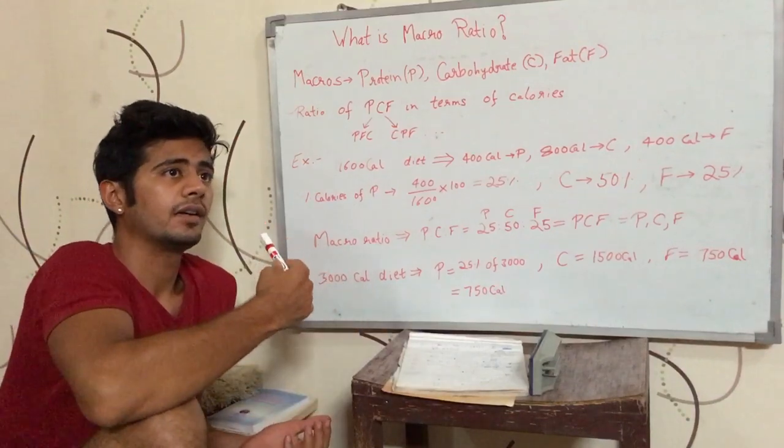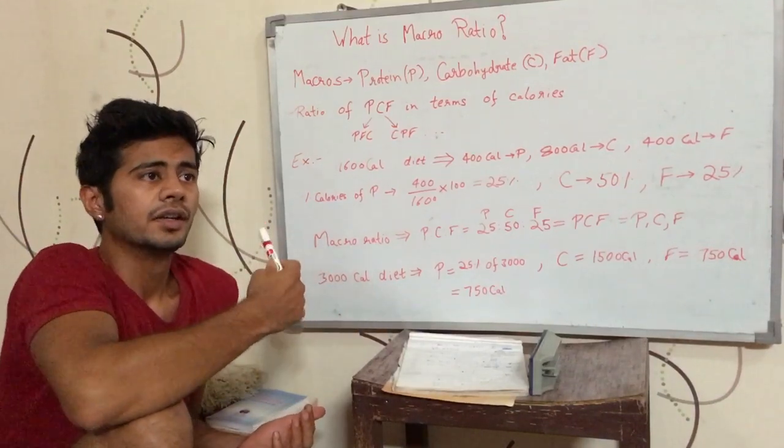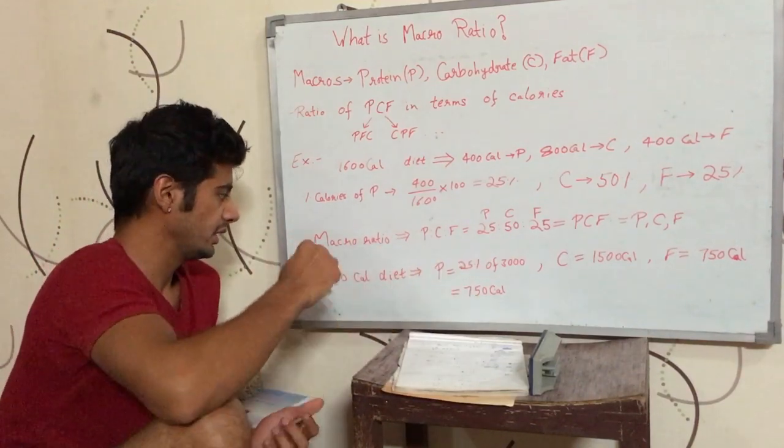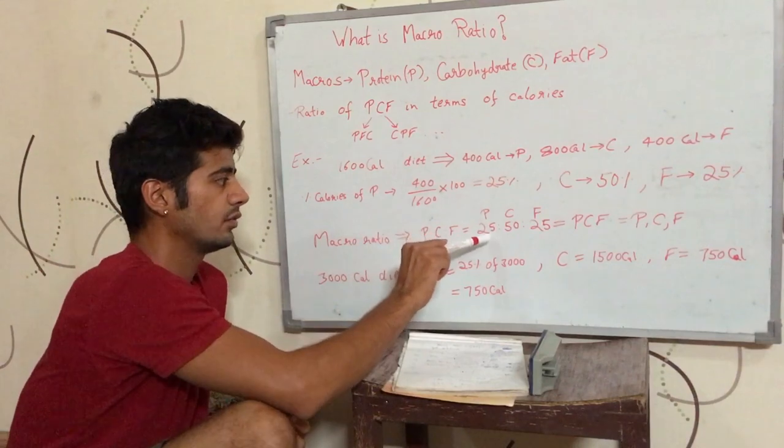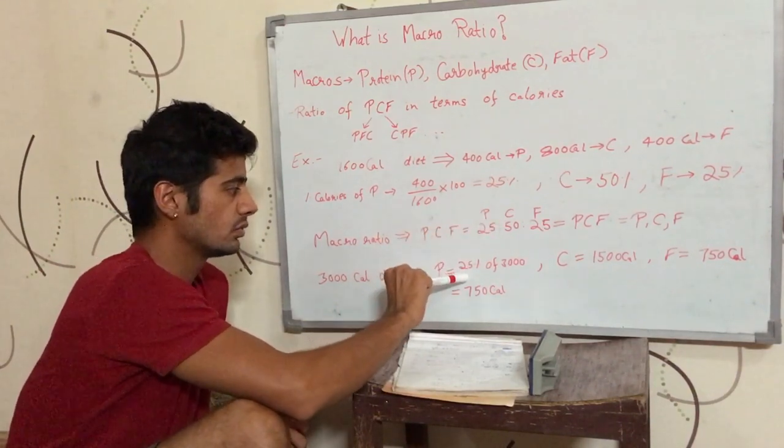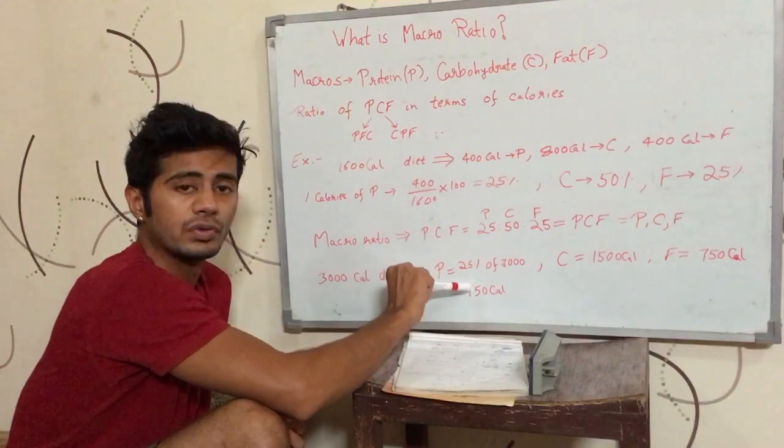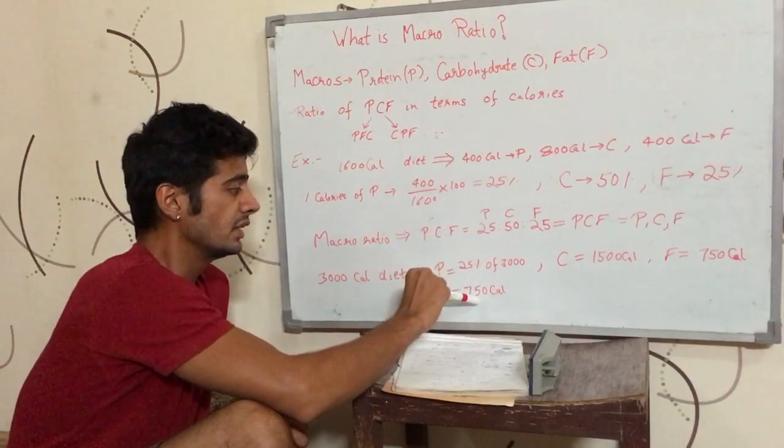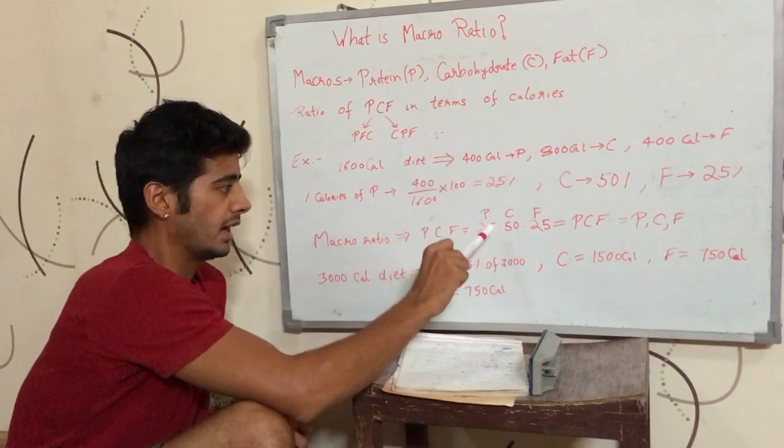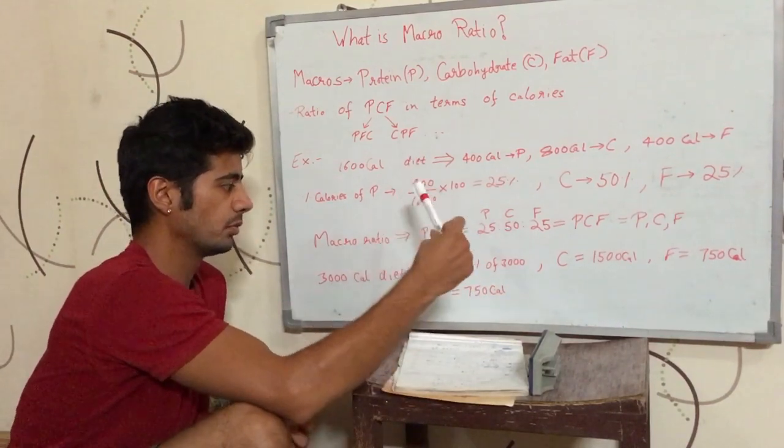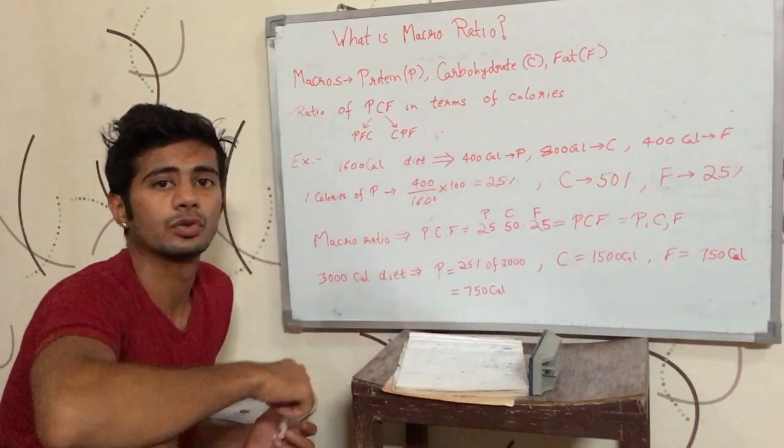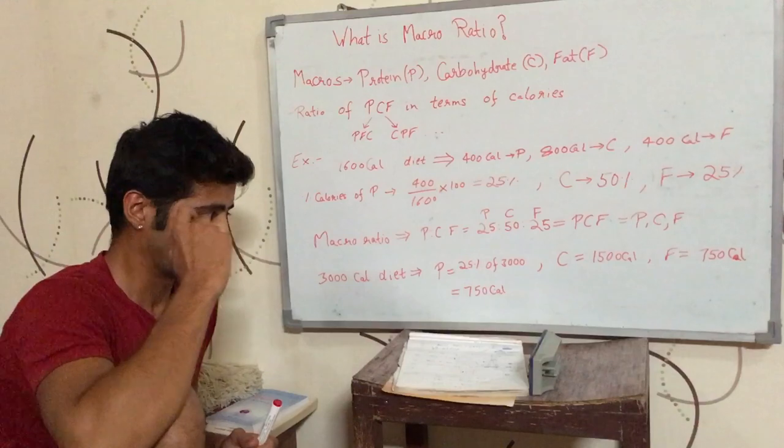Now, we want to have a 3000 calorie diet with the same PCF ratio. If a 3000 calorie diet has to have 25% calories coming from protein, that means 750 calories, which is 25% of 3000. 750 calories should come from protein and 50% calories should come from carbohydrates, that is 1500 calories, and again 25% or 750 calories should come from fat.